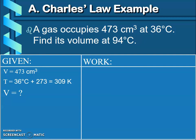At 94 degrees Celsius - again I cannot use that degree Celsius, we need to convert that into Kelvin. Going to add 273, so 94 plus 273 equals 367 K.